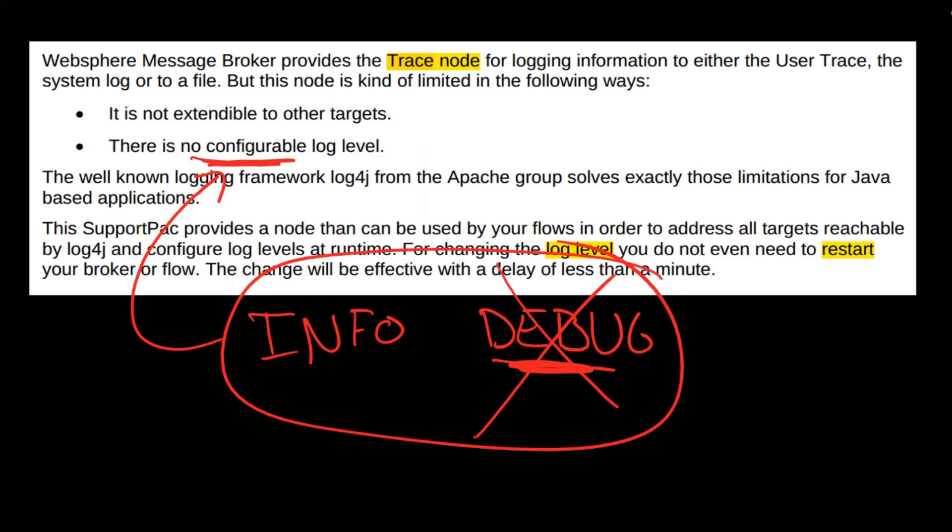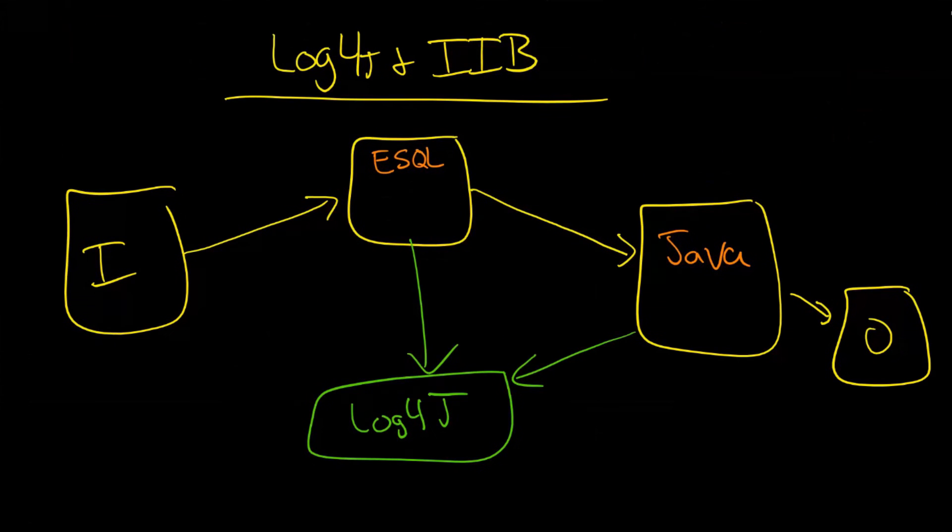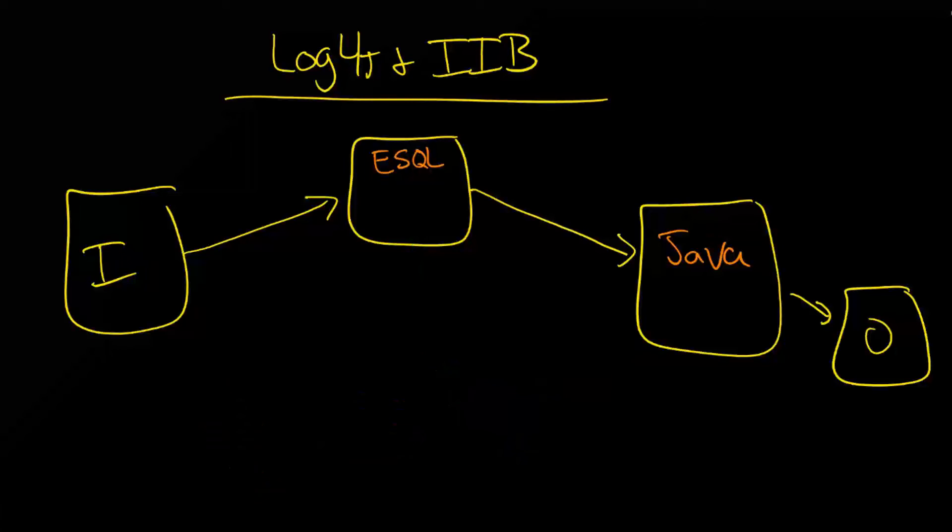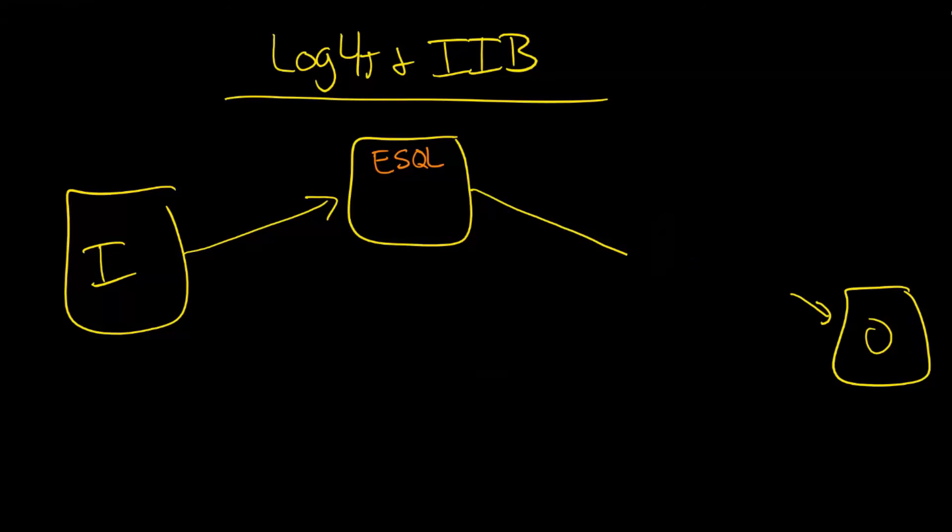And instead, you need once again to use log4j, which can do that. And in practice, what would actually happen here is we have to draw this slightly different. You're going to see this in practice soon anyway. But you'd have to redraw this to the point where you would have, say,